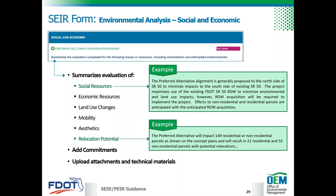In the SWEPT-based SEER form, there is a page for each of the environmental resources divided up by sub-resource. For the social and economic section, you will see subsections for each resource listed. The form allows you to check whether any of the resources are enhanced or whether they will have a substantial impact or not. A brief summary is provided for each resource, commitments can be added, and technical materials and attachments can be uploaded.